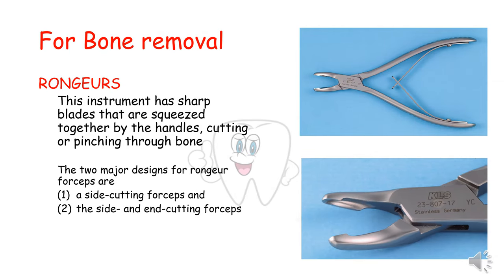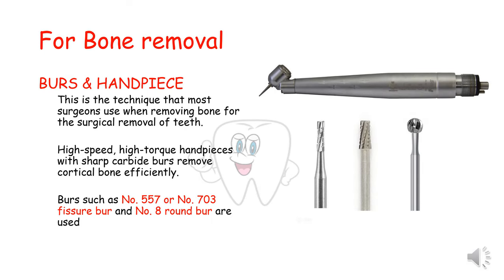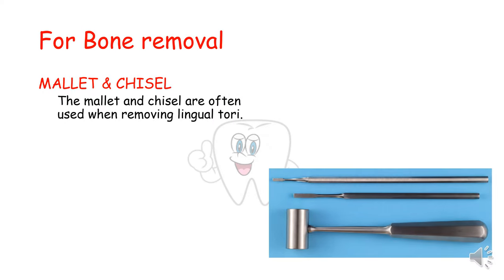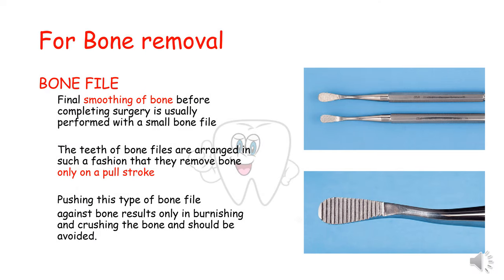Now come the instruments for bone removal. The first are rongeurs, which have sharp blades squeezed together by the handles, cutting or pinching through bone. The two major designs are a side cutting forcep and a side and end cutting forcep. High speed and high torque handpieces with sharp carbide burrs remove cortical bone efficiently; burrs such as number 557 or number 703 fissure burrs and number 8 round burrs are used. The mallet and chisel are often used for removing lingual tori. The bone file is used for final smoothing of bone; its teeth are arranged to remove bone only on a pull stroke — pushing it against bone results only in burnishing and crushing and should be avoided.